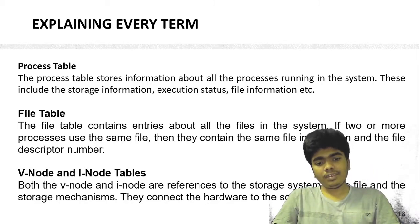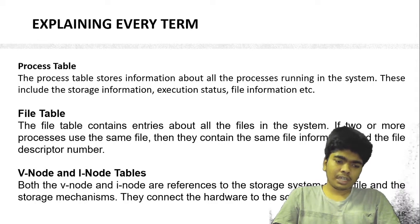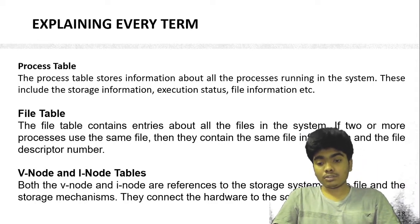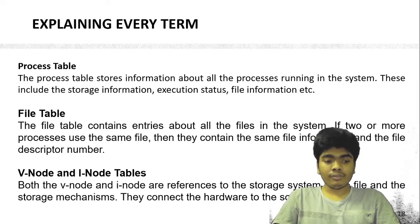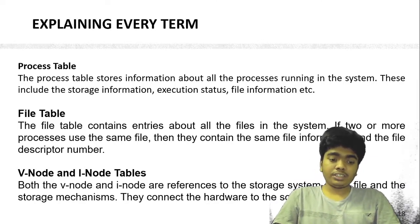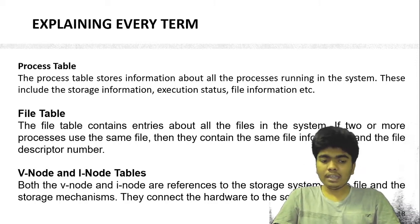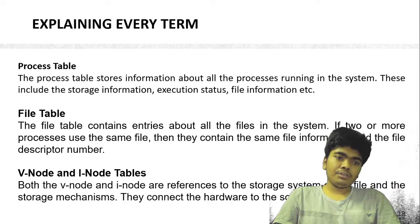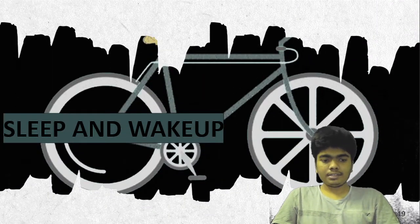The V-node and I-node tables are references to the storage system of the file and the storage mechanisms. They connect hardware to software and give instructions on how to store data — the storage mechanisms are explained by the V-node and I-node tables.